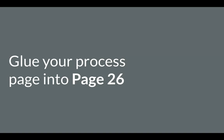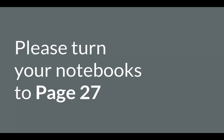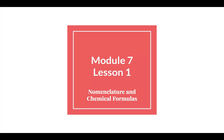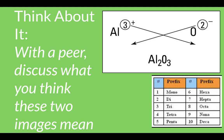You should have your process page glued on to page 26 in your quarter three notebooks, page 26 with the nomenclature side up, and you are ready — now you're turning your notebooks to page 27. Go ahead and title this lesson notes: nomenclature and chemical formulas.